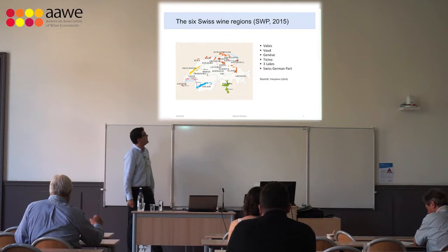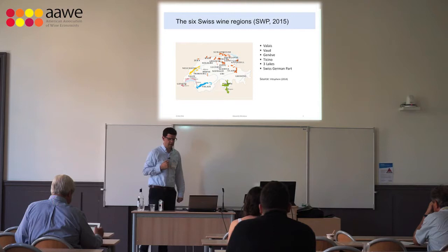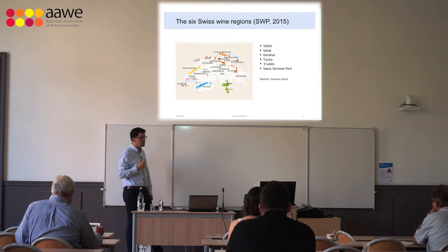To present the situation in Switzerland, we have six wine regions. In the west part, the French-speaking part, we have Valais, Vaud, Geneva, and Three Lakes. Then we have the Italian-speaking part, Ticino, in the south, which is more red — Merlot. And then we have the German-speaking part, which is considered as one wine region.